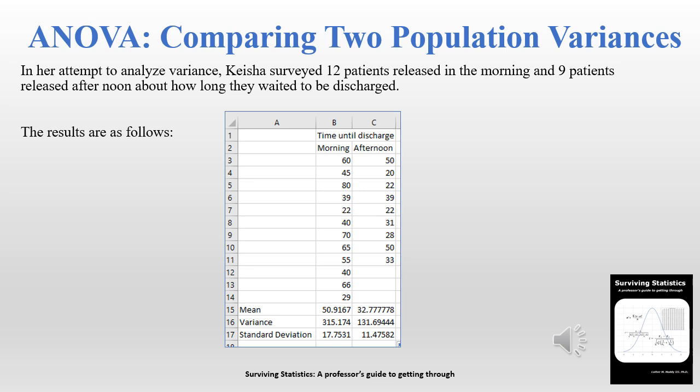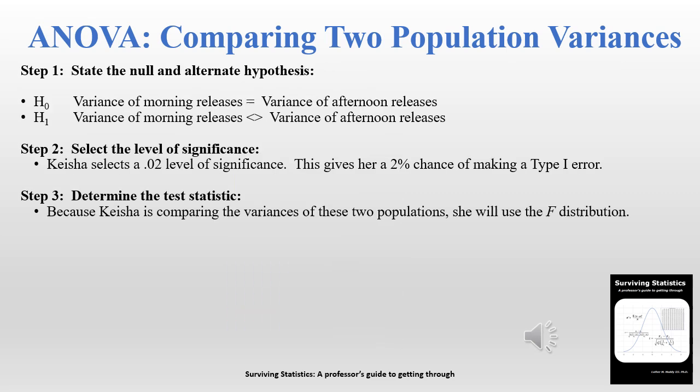We'll go through the hypothesis testing procedure to see if there really is a difference in the variance. Step one is to state the null and alternate hypotheses. The null hypothesis is that discharge times between morning and afternoon are equal. The alternate hypothesis is that there is a difference — not necessarily shorter or longer, just a difference. For step two, Keisha has decided to use the 0.02 level of significance, giving her a 2% chance of making a Type I error.